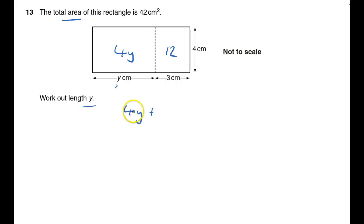So that'll give me 4y plus 12 equals 42, because those are my two individual bits of the rectangle, and the grand total area of the rectangle is 42.